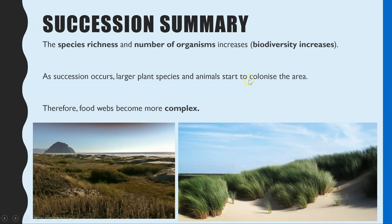To summarise the key points of succession: species richness — the number of different species — increases, as does the number of organisms, so overall biodiversity increases over time. Larger plants and animals colonise and survive, and you get more complex food webs. This is why the environment becomes more stable — because even if a small section of plants is destroyed, the high number of different species and individuals means the whole area should be able to recover.